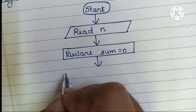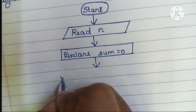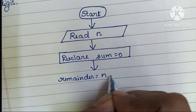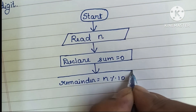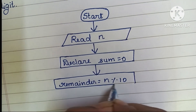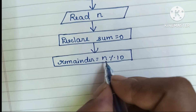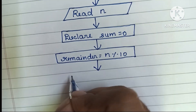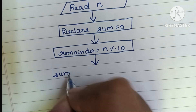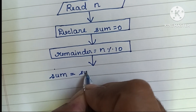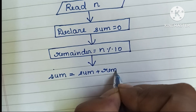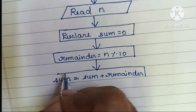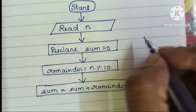Next we start the calculation. First, we have to find the remainder: remainder is equal to N modulo 10. This calculation is written within a rectangular shape. Then we calculate the sum value using the formula: sum is equal to sum plus remainder.